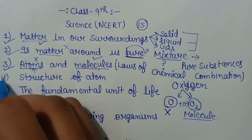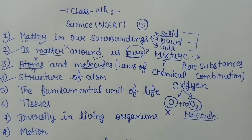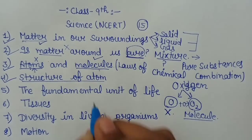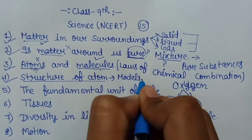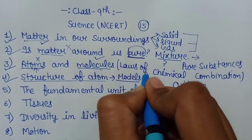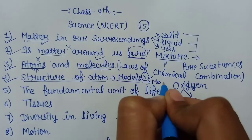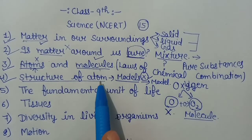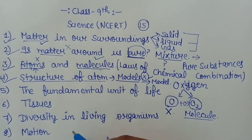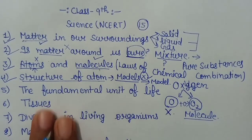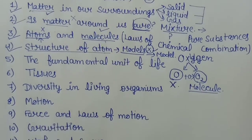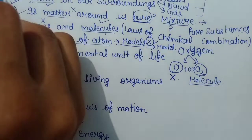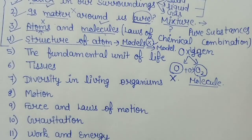अब हमने देख लिया कि atom क्या होता है, molecule क्या होता है — लेकिन atom होता कैसा है, उसका structure कैसा है, क्या उसके हाथ-पैर होते हैं या फिर वो किस चीज़ से मिलकर बना है? तो उसके लिए हम पढ़ेंगे chapter number 4 — Structure of Atom. हम कुछ models पढ़ेंगे, उनकी limitations देखेंगे, और नए model पर move करेंगे। Atom के अंदर electrons, neutrons, protons होते हैं — in short nucleus और electrons होते हैं। Up to chapter number 4, this is the chemistry portion.